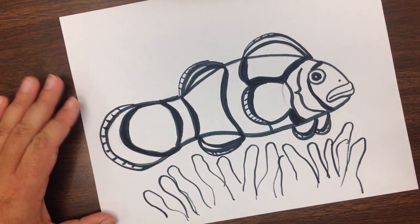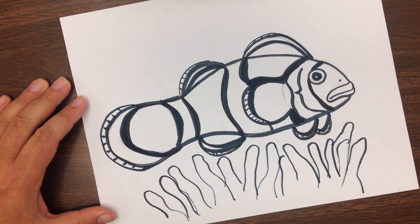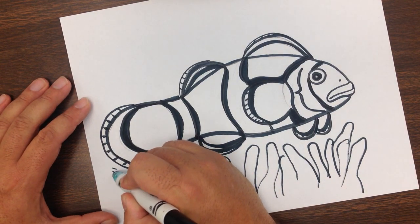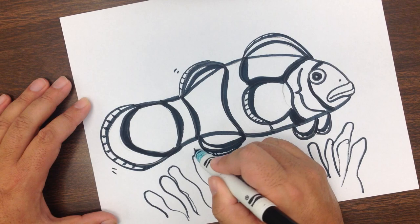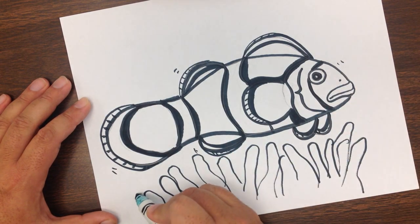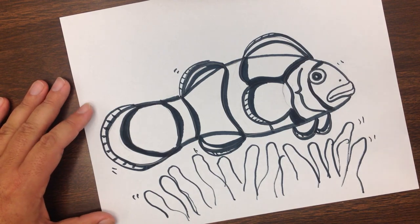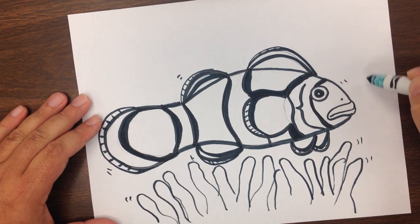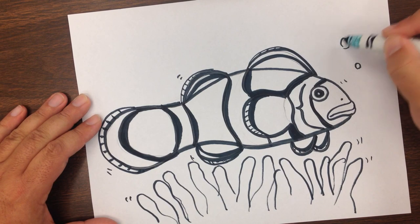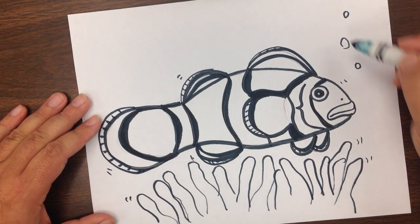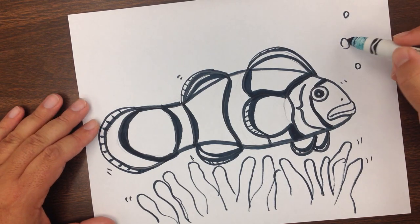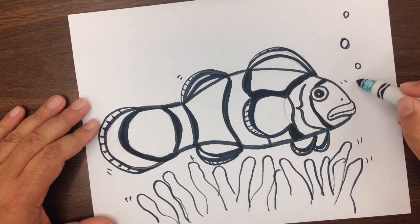And so that our fish doesn't look like it's just standing still, but it's always kind of moving around, we'll add some of these little motion lines here. Maybe put a few of those in the anemone too to make it look like it's kind of moving around with the ocean currents. And maybe add a few bubbles like this.